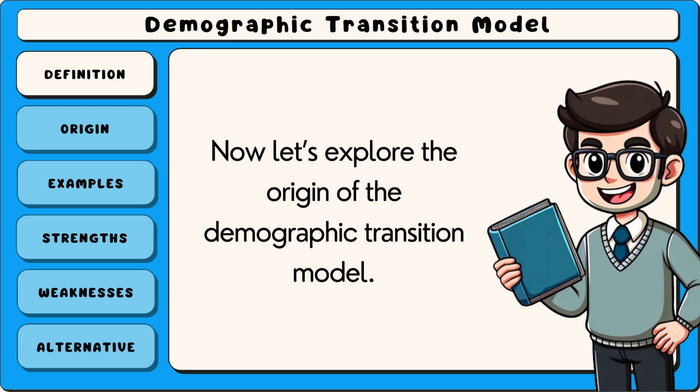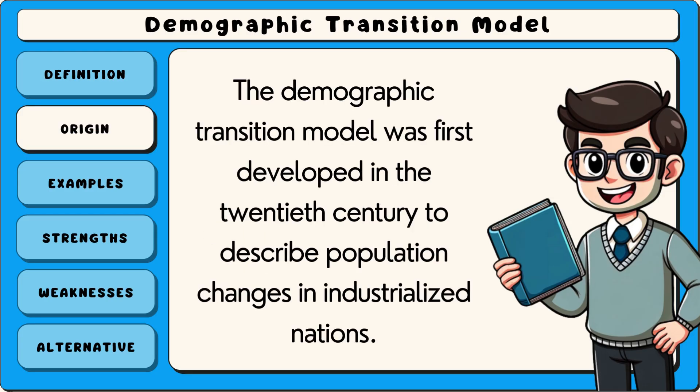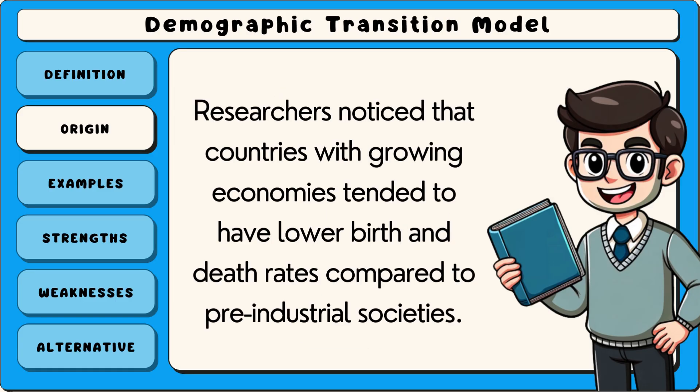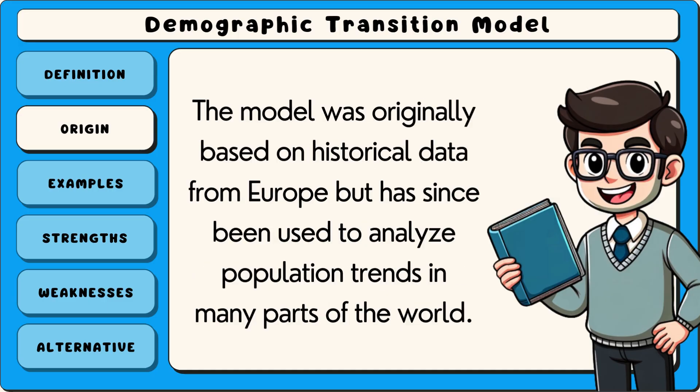The demographic transition model was first developed in the 20th century to describe population changes in industrialised nations. Researchers noticed that countries with growing economies tended to have lower birth and death rates compared to pre-industrial societies. The model was originally based on historical data from Europe, but has since been used to analyse population trends in many parts of the world.